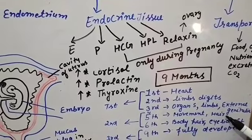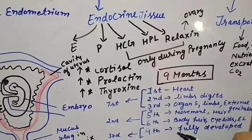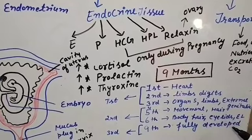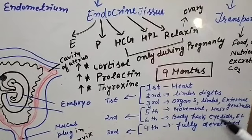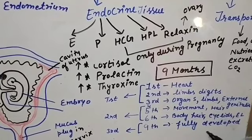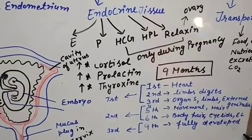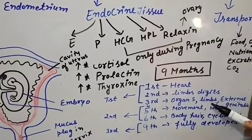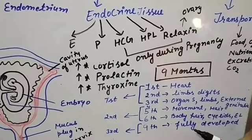At the end of the 6th month, the body is covered with fine hairs and the eyelids and eyelashes are formed. By the 9th month, the baby is fully developed. These are the different changes that take place during the 9 months of pregnancy.